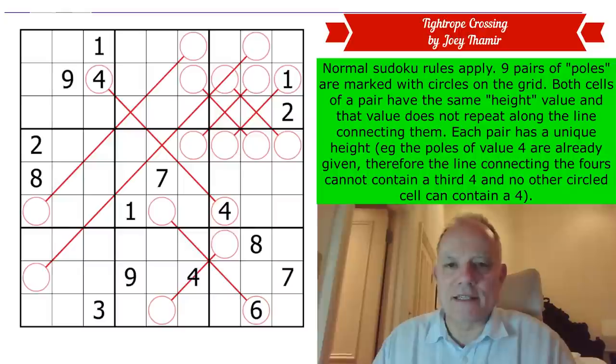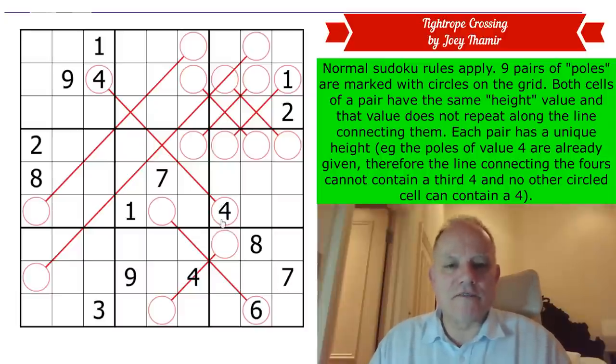I had to delve into the palette and put a gray circle in for a ninth color. No colors today, just circles and tightropes connecting them. I'll read you the rules. Normal sudoku rules apply. Nine pairs of poles are marked with circles on the grid.